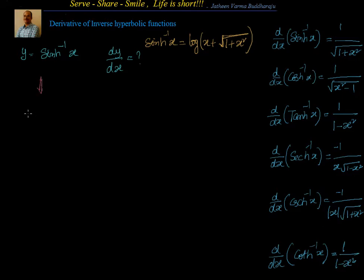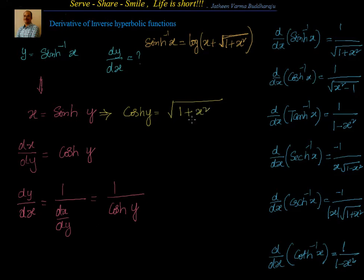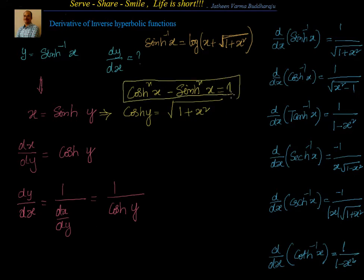If I take x equal to sinh(y), I will get dx/dy equal to cosh(y) — we know the differentiation of sinh(y) is cosh(y). But what we want is dy/dx. That is equal to 1 divided by dx/dy, which is equal to 1 by cosh(y). Now, if x is sinh(y), what is cosh(y)? Cosh(y) is equal to square root of 1 plus x square. We use the identity: cosh²(x) minus sinh²(x) equals 1.